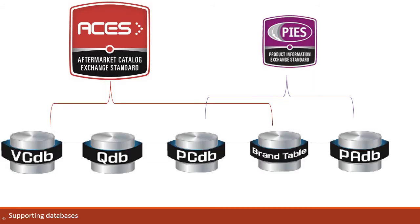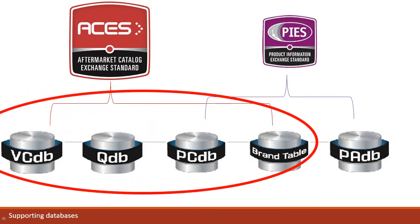ACEs is built upon four databases, each containing a unique set of structures and fields. There is the VCDB, the QDB, the PCDB, and the brand table.